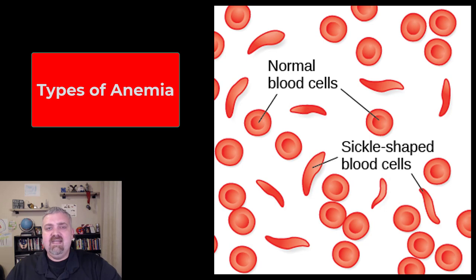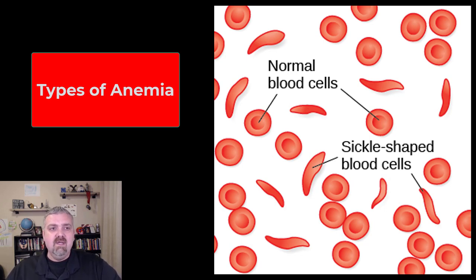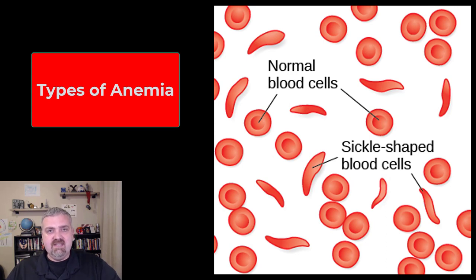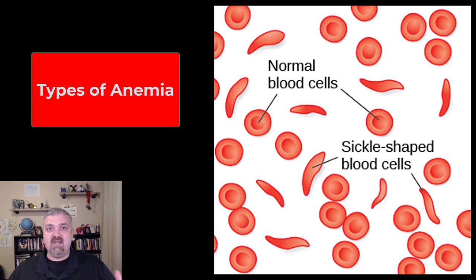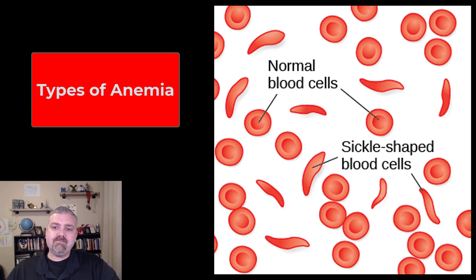Other types of anemia — many of them are nutrient deficiencies. The most common nutrient deficiency in the world is iron. Iron deficiency leads to what's called a microcytic anemia. We have too few red blood cells, and the ones we have are tiny because there's not enough iron to actually produce the functioning hemoglobin we need.